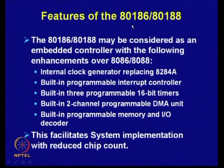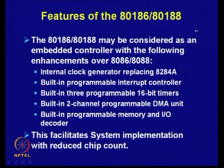Just like 8086 and 8088, the 80186 and 80188 introduce two processors. These may be considered as embedded controllers with the following enhancements over the 8086 and 8088. Intel targeted their processors in two directions: one is for embedded applications, which requires a minimum number of chips so that a complete system can be built.